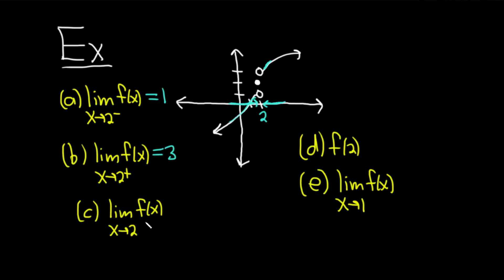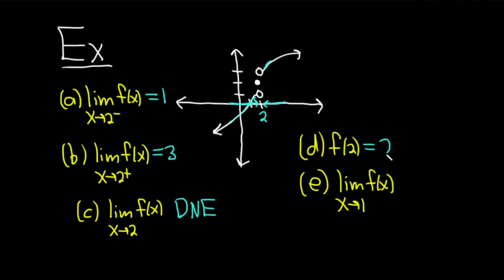Part c asks for the two-sided limit — the limit of f of x as x approaches 2. Because the one-sided limits are not equal, the answer is does not exist, indicated with D.N.E. Part d wants us to find f of 2, which is the y value when x is 2. Looking at the graph, the y value is actually 2. So the answer is 2.